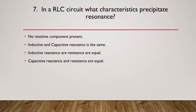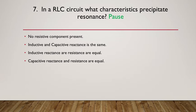Question seven: in an RLC — resistance, inductance, capacitance — series circuit, which condition precipitates resonance? The options are: no resistive component is present; the inductive and capacitive reactances are the same; inductive reactance and resistance are equal; or capacitive reactance and resistance are equal. Pause and think about the answer.